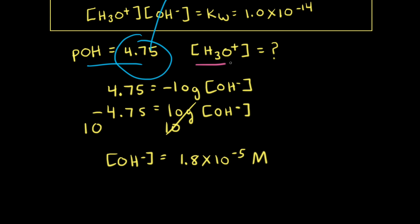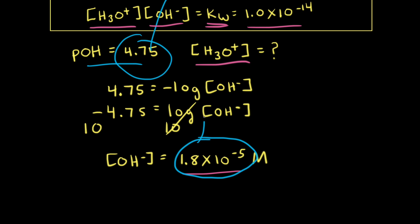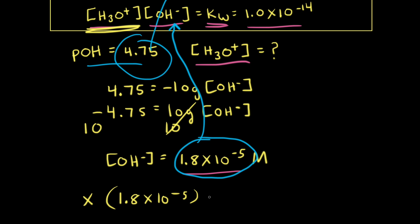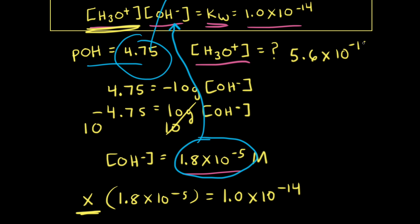Our goal is to find the concentration of hydronium ions, and we have the concentration of hydroxide ions. We can use the Kw equation: the concentration of hydronium ions times the concentration of hydroxide ions equals Kw, which is 1.0 times 10 to the negative 14th at 25 degrees Celsius. Plugging in 1.8 times 10 to the negative 5th for hydroxide and X for hydronium, we solve and find X equals 5.6 times 10 to the negative 10th molar.